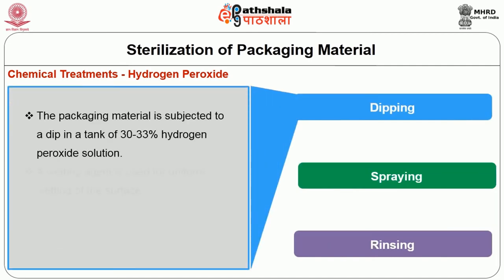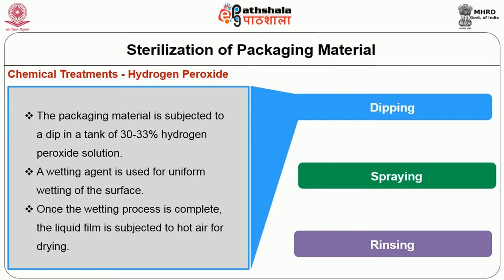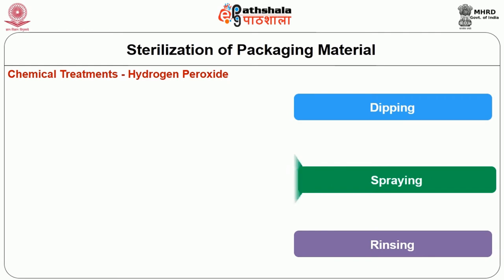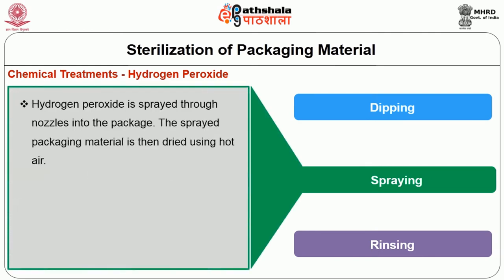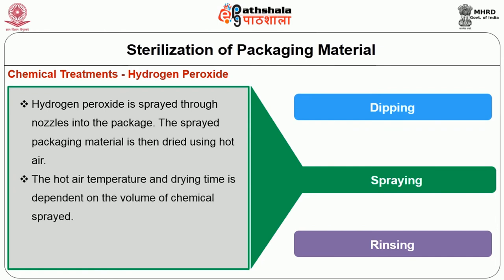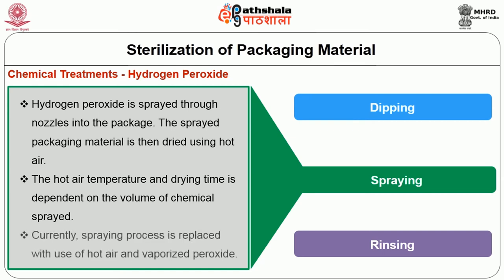In the dipping technique, the packaging material is subjected to a dip in a tank of 30 to 33 percent hydrogen peroxide solution. A wetting agent is used for uniform wetting of the surface. Once the wetting process is complete, the liquid film is squeezed off for drying. In the spraying technique, hydrogen peroxide is sprayed through nozzles into the package. The sprayed packaging material is then dried using hot air. The hot air temperature and drying time are dependent on the volume of chemical sprayed. Currently, the spraying process is being replaced with the use of hot air and vaporized peroxide.